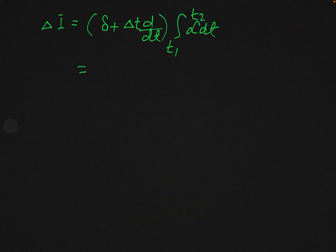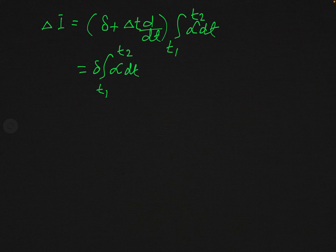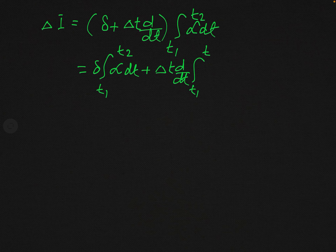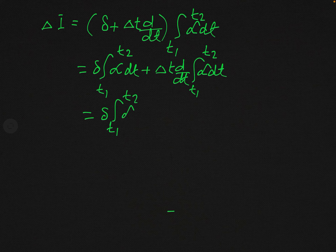Simplifying the right-hand side, this can be written as: small delta integral from t1 to t2 of L dt, plus capital Delta T times d/dt of the integral from t1 to t2 of L dt.